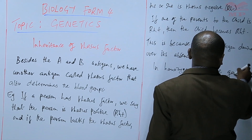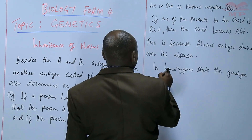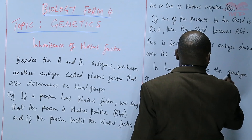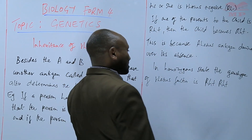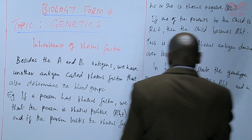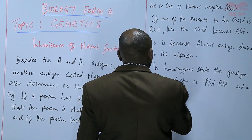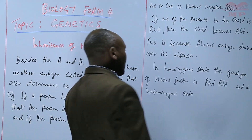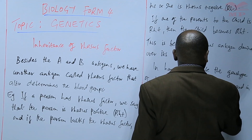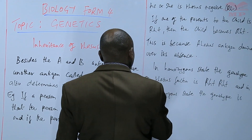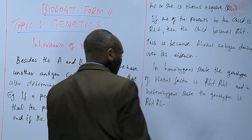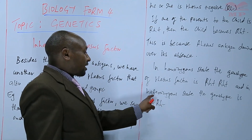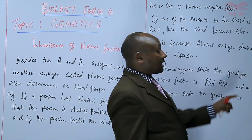In homozygous state, the genotype of the Rhesus factor is RH positive, RH positive — that is in homozygous dominant state. In heterozygous state, where the two alleles are not similar, the genotype is RH positive, RH negative — one is positive and the other one is negative. Where both are positive, that's a homozygous dominant state.